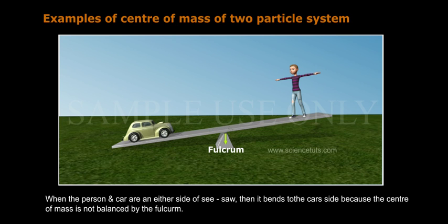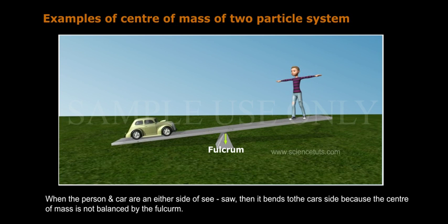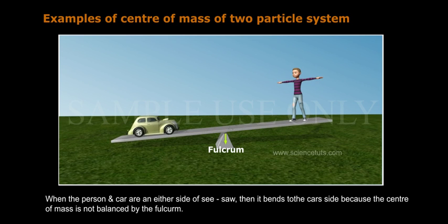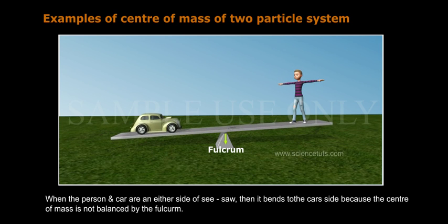When the person and car are on either side of the seesaw, it bends to the car side because the center of mass is not balanced by the fulcrum.